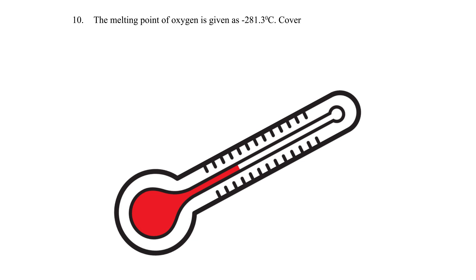Question 10: The melting point of oxygen is given as -281.3°C. Convert this temperature to Kelvin. Solution: -281.3 + 273 = -8.3 K.